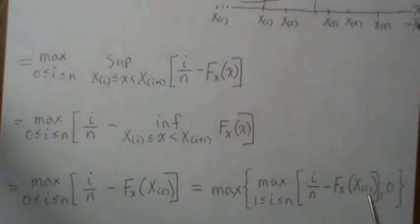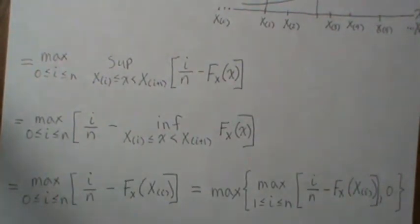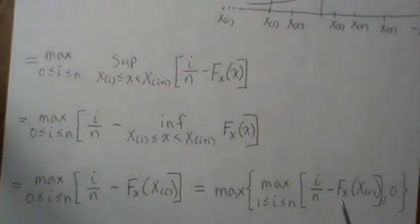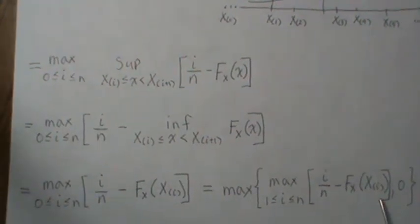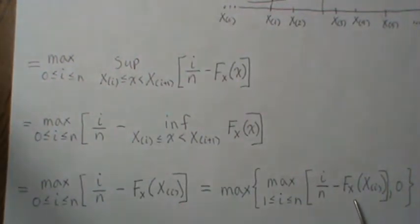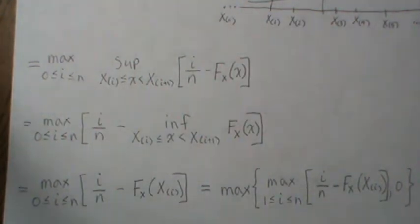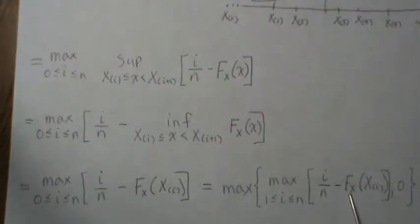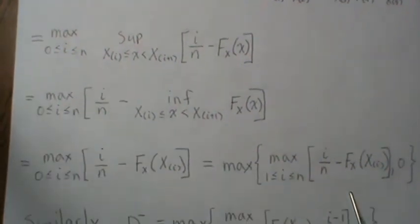Now here's the key insight: F(X_(I)), where X_(I) is an order statistic from a continuous CDF, is itself an order statistic from a Uniform(0,1) distribution. No matter what continuous CDF we hypothesize, it boils down to looking at order statistics from a uniform variable. This follows from the probability integral transformation, which is covered in my previous video. Therefore, this test statistic does not rely on the hypothesized CDF — which is fascinating.